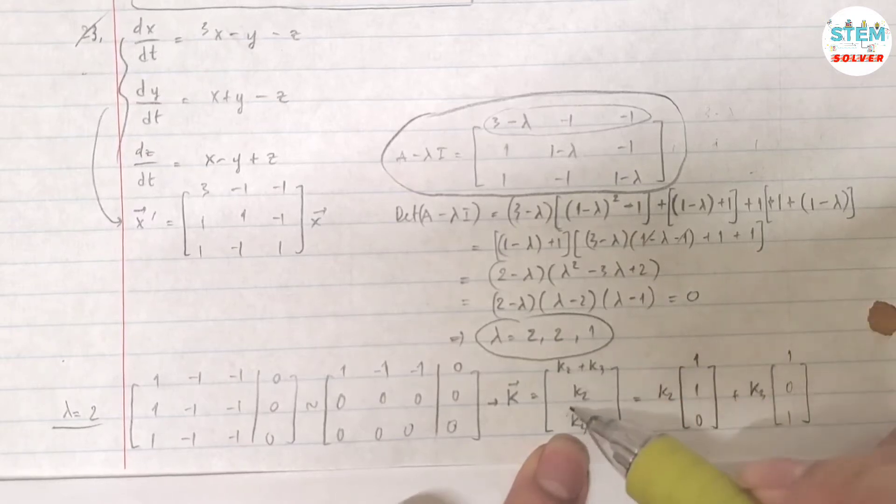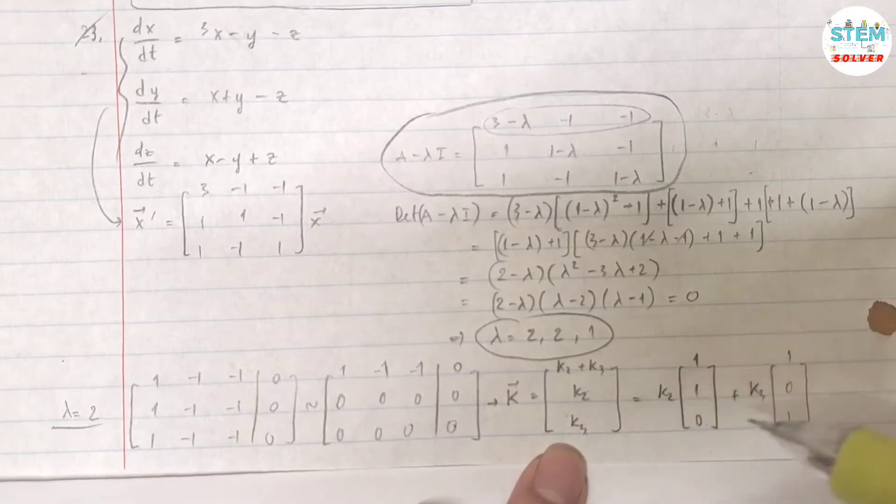So if I break it down into k2, as you can see, in fact, if you factor out k2, right here you have 1. For this entry you have 1, for this entry you have 0. So that's why you have 1, 1, 0, k2. Now for k3, if I factor out k3 I have 1, 0, 1.